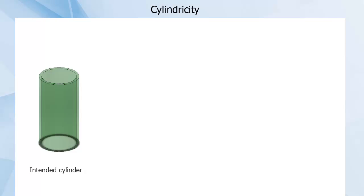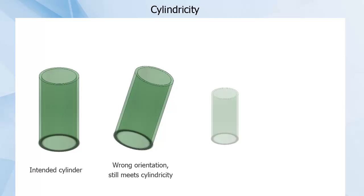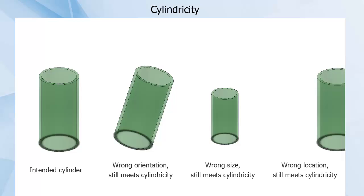As a form control, cylindricity is independent of orientation, size, or location. Keep in mind a tight cylindricity tolerance does not guarantee the correct size of the cylinder, only the shape.